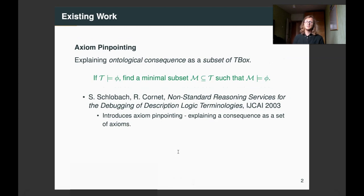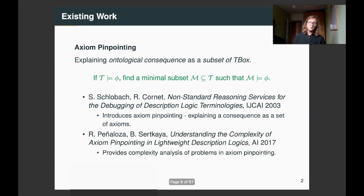Later, axiom pinpointing came about, where, given that the T-box entails some axiom, we want to find a minimal subset of that T-box that still supports the entailment of that axiom. And later works considered complexity of the problems associated to axiom pinpointing. So, those works are very close in nature to ours.